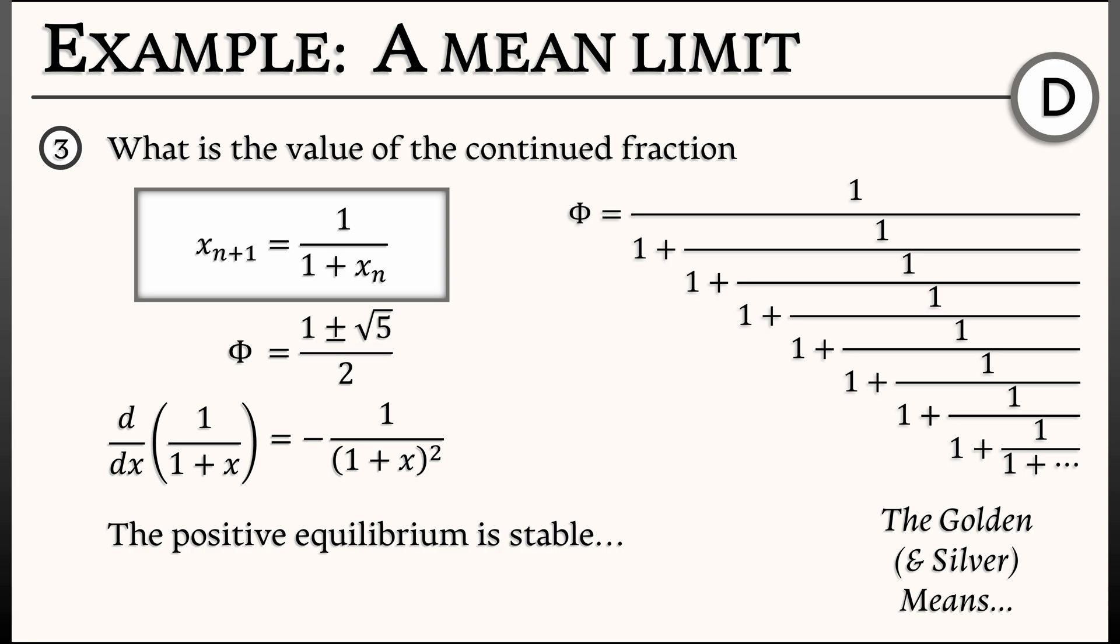Now, I'll leave it to you to argue that when you substitute in the other equilibrium, the silver mean, you're going to get an unstable equilibrium.